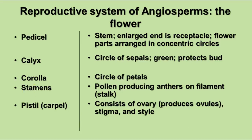The stamens are the male part of the flower — the pollen-producing anthers on the filament. The pollen grains contain the male gametophyte. The pistil or carpel is made up of the ovary, stigma, and style. The ovary contains the ovules, which contain the female gametophyte.